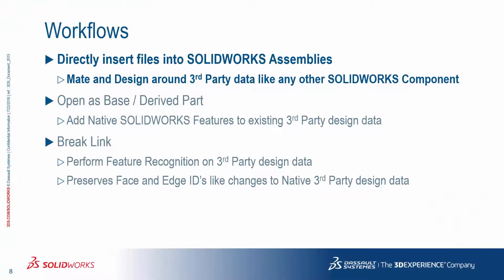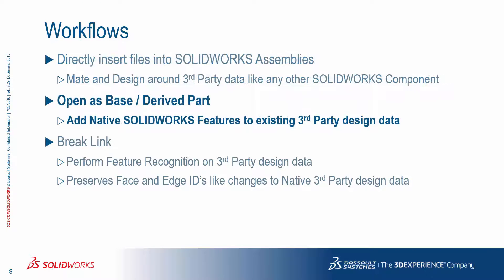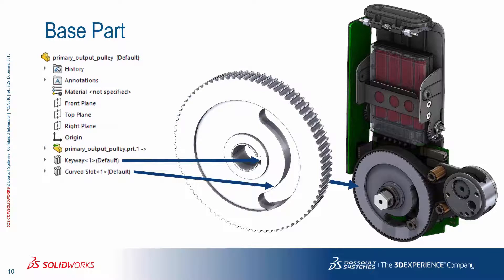This is probably the most common workflow that users will want to take advantage of immediately, but 3D Interconnect offers other ways to work with third-party CAD data. Let's look at another: directly opening a file and using it like a derived or base part. In this case, we'll be working with a pulley designed in PTC Creo by a vendor. We're going to need to add some of our own features after we receive the actual part — in this case, a keyway and a hard stop slot.